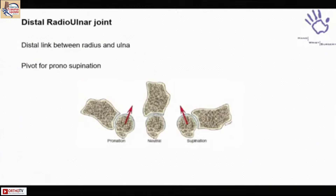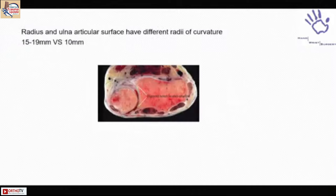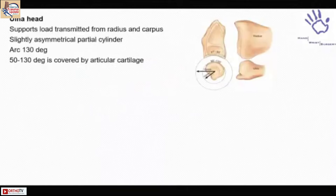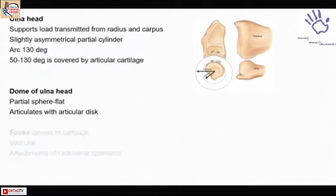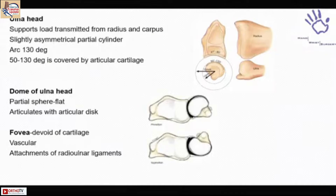The distal radioulnar joint (DRUJ) is a pivot for pronation and supination — that is how rotations are affected in this pathology. There is a difference in the curvature of the radius as well as the ulna at this level, so the joint is not inherently stable. It depends a lot on soft tissue stabilizers, and here comes the picture of the TFCC. The attachment of the TFCC is at a particular point called the fovea, which is devoid of articular cartilage on the ulnar head.